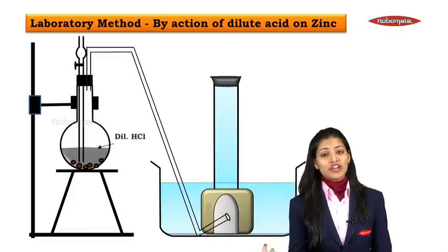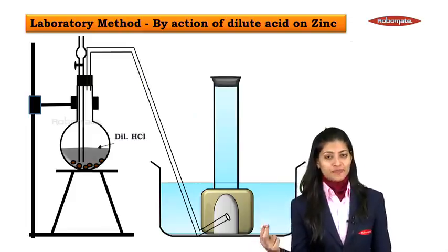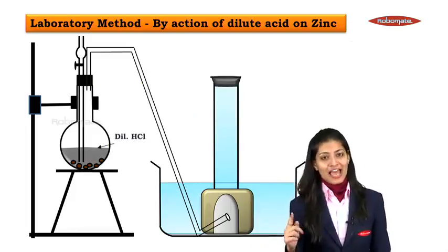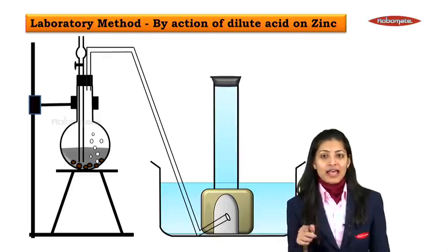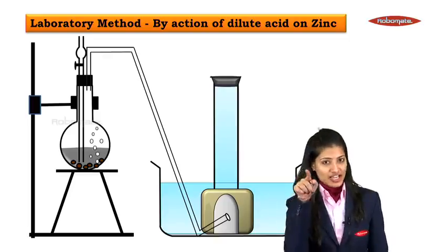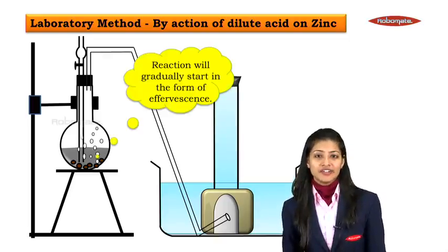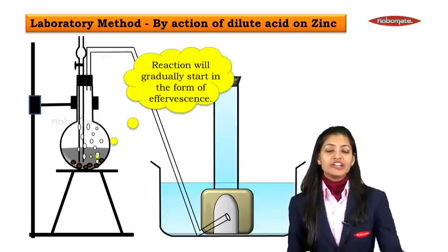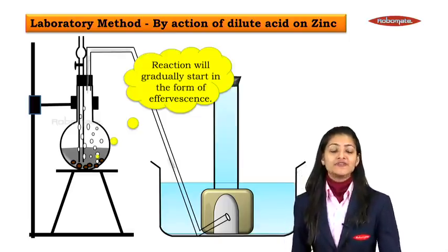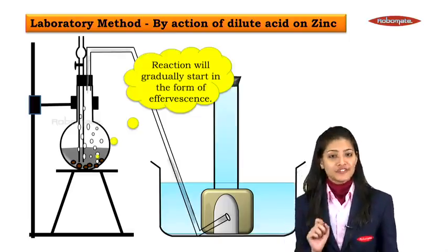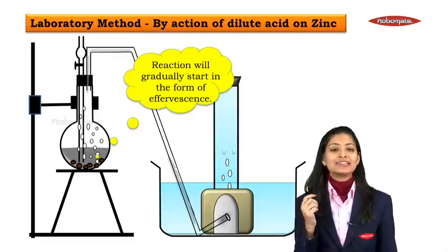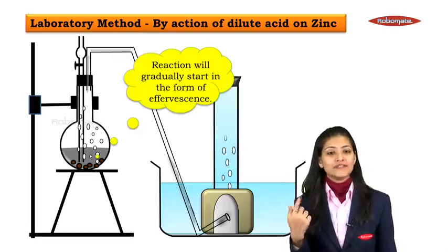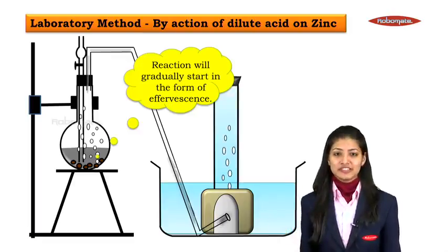When the reaction takes place between zinc granules and dilute HCl, it leads to the formation of hydrogen gas, which passes through the delivery tube. The reaction gradually starts in the form of effervescence — rapidly forming bubbles which are called effervescence.